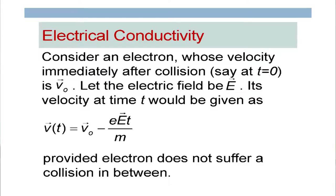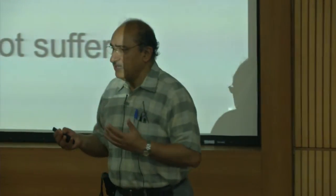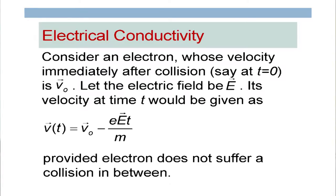Let us focus on one electron which has just come out of a collision, with velocity V₀ at time t=0. Assume we have applied an electrical field E to the system. This electron will experience a force as per Newton's law — all classical mechanics, no quantum mechanics at that time. Its velocity would change under the influence of the electric field until it suffers the next collision. So the electron collides, its velocity becomes random, then accelerates due to the electric field, then collides again.